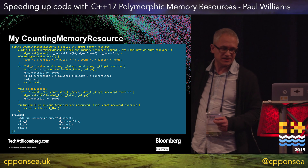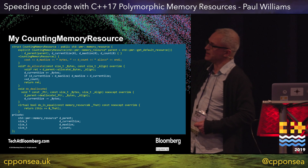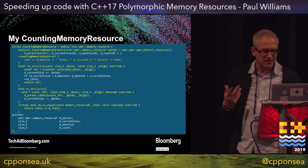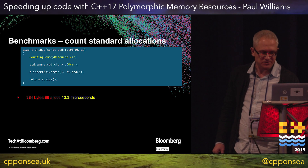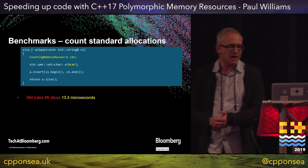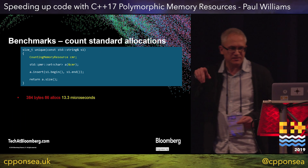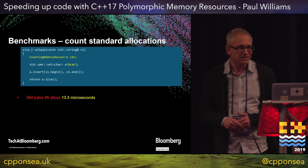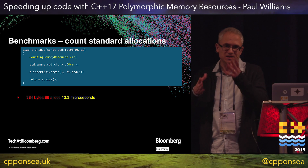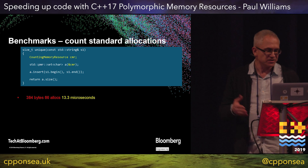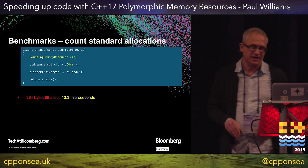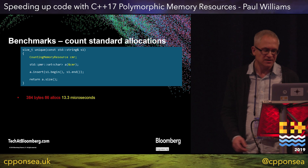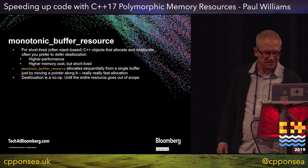That's the most complicated piece of code you're going to see. But basically, that's something that is really just intercepting new and delete and counting the amount of memory that's being allocated and how many allocations you do. Let's run it. I ran this on my simple 22 unique character string: 384 bytes allocated, 86 allocations happening inside that set — because it's building a tree as it goes. 13.3 microseconds.